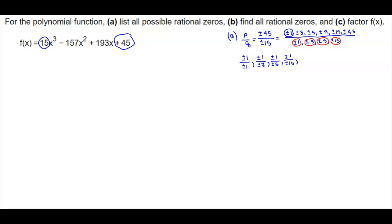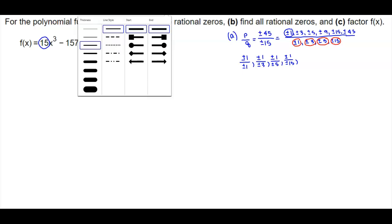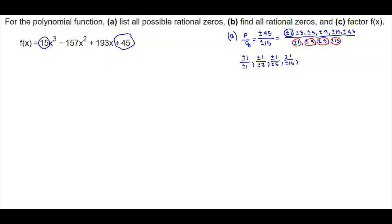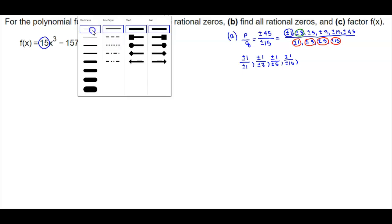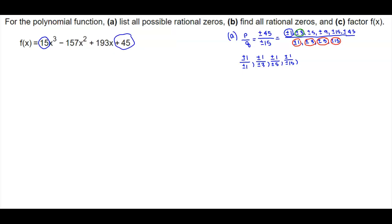Now we're going to take the next numerator value, which is plus or minus 3, and divide it by each number in the denominator. So we have plus or minus 3 divided by plus or minus 1, plus or minus 3 divided by plus or minus 3, plus or minus 3 divided by plus or minus 5, and plus or minus 3 divided by plus or minus 15.